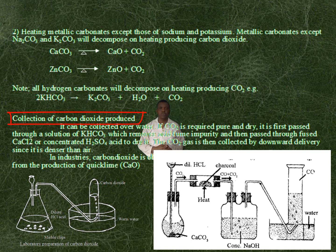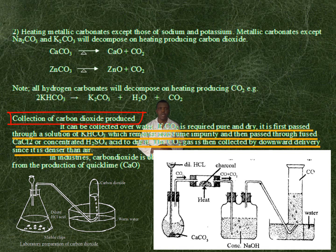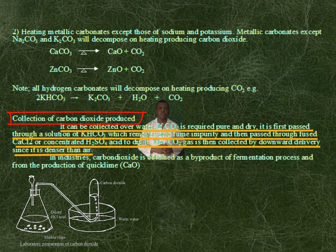Collection of carbon dioxide produced: it can be collected over water. If carbon dioxide is required pure and dry, it is first passed through a solution of potassium hydrogen carbonate, which removes acid film impurity, and then passed through fused calcium chloride or concentrated sulfuric acid to dry it. The carbon dioxide gas is then collected by downward delivery, since it is denser than air.